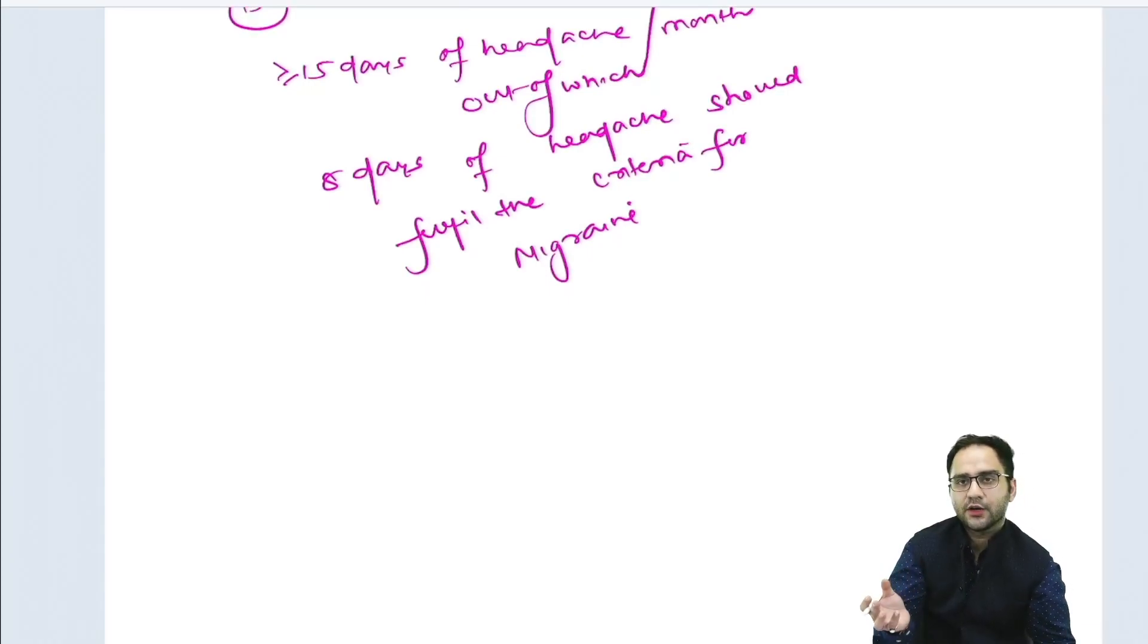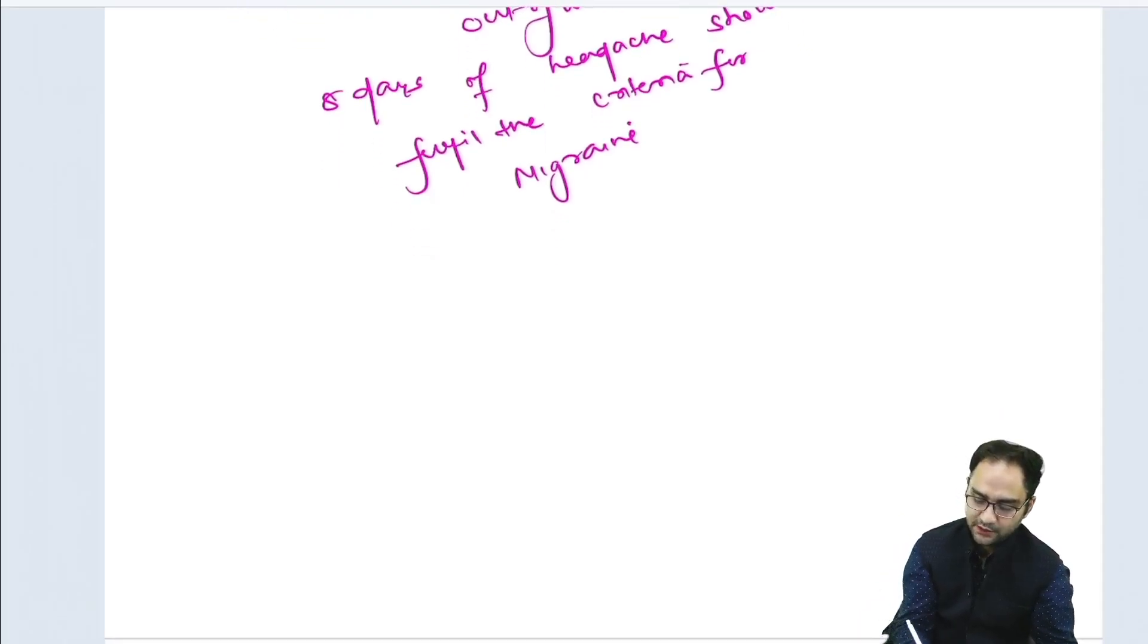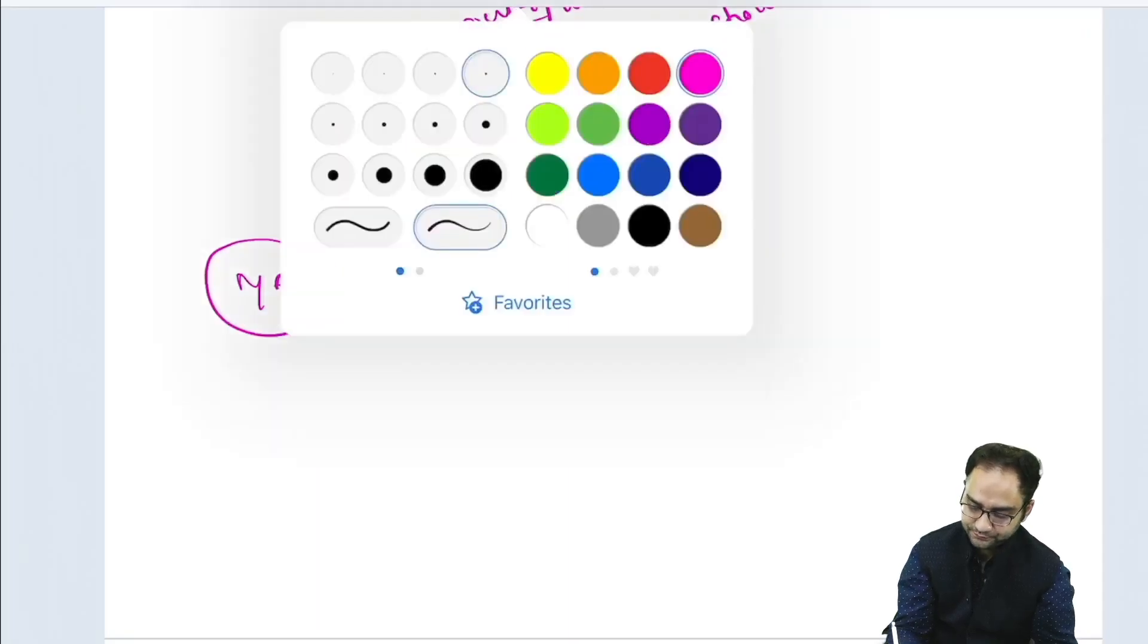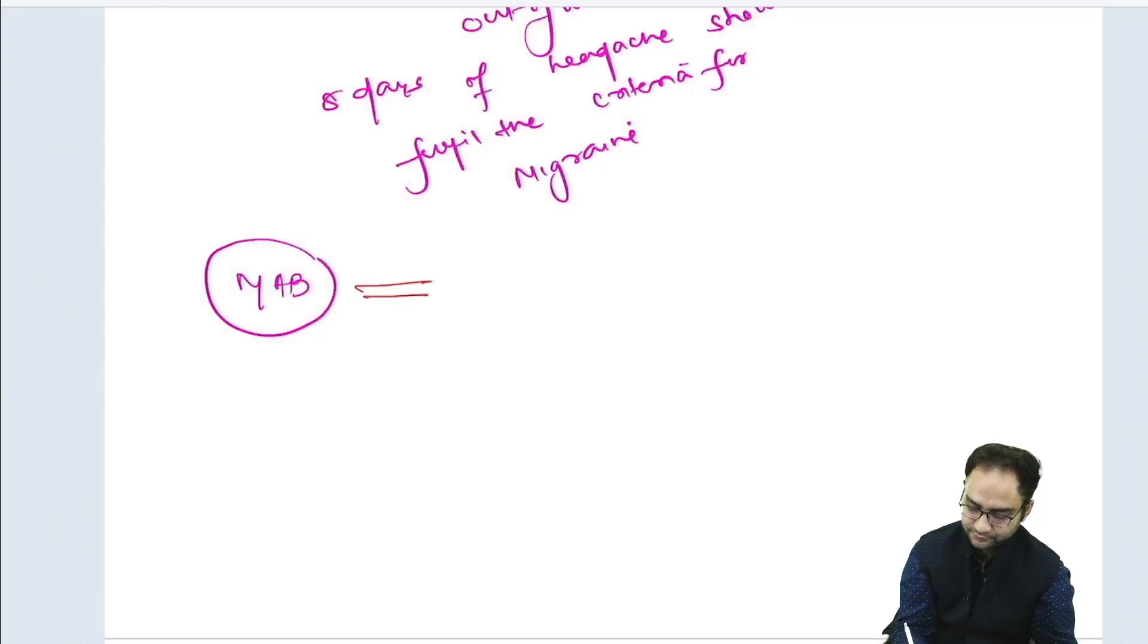As I mentioned for acute migraine, we have the rimegepant and the ubrogepant. In chronic migraine, we have the MABs—the monoclonal antibodies. We have the monoclonal antibodies acting against the CGRP.